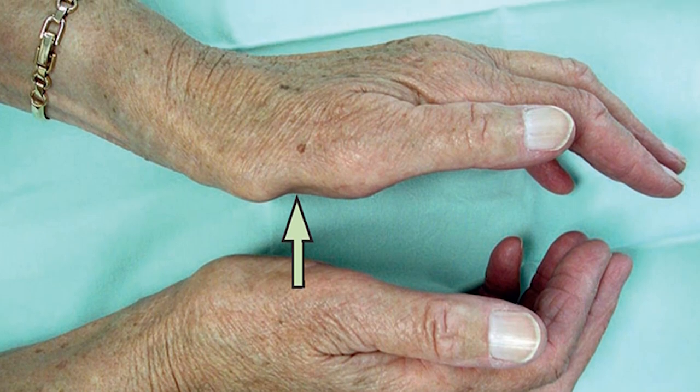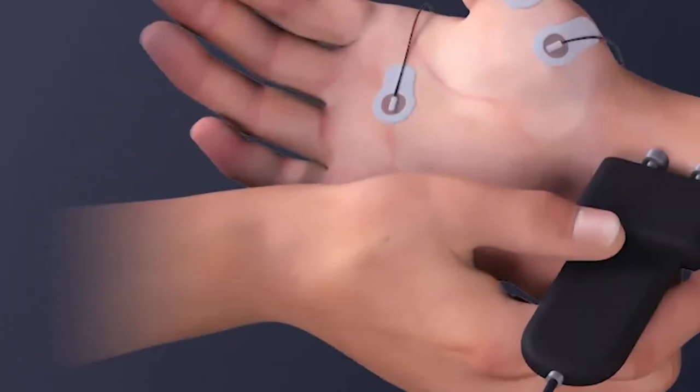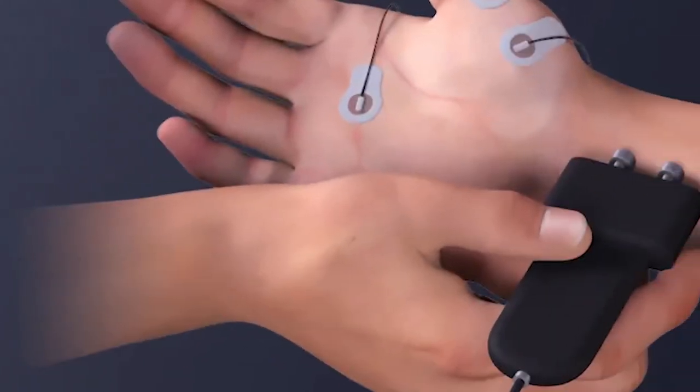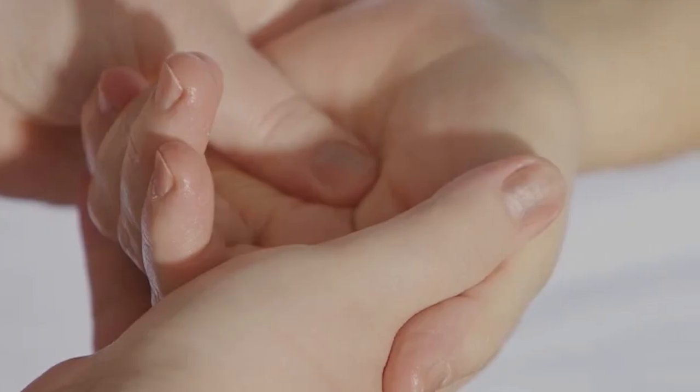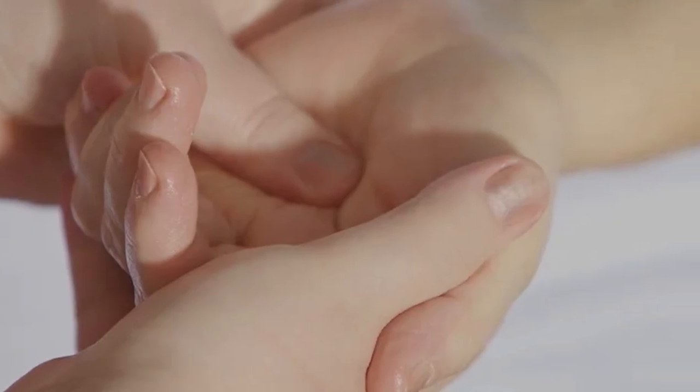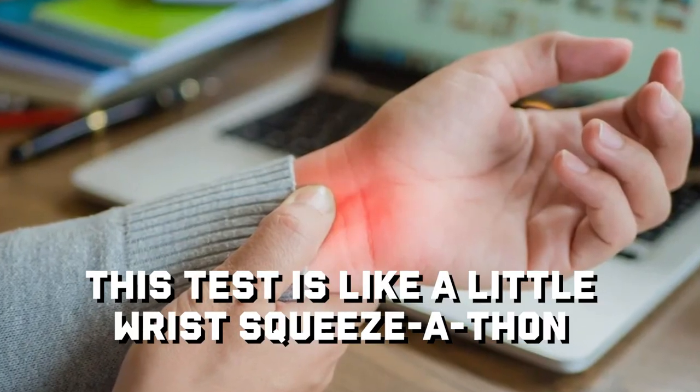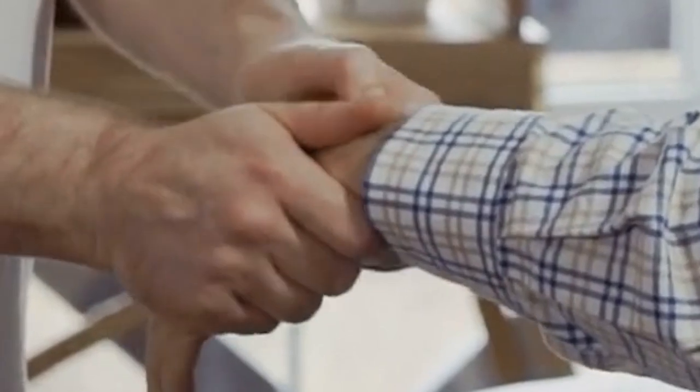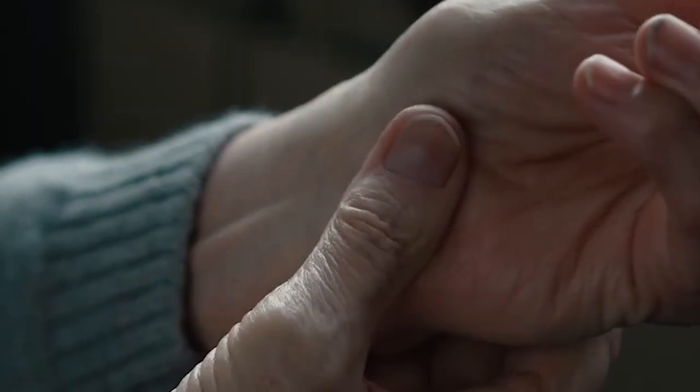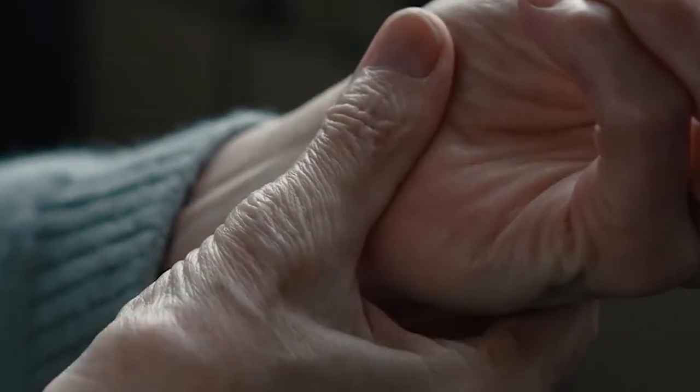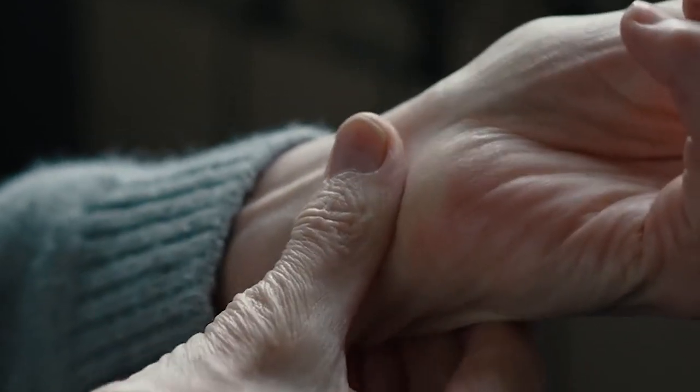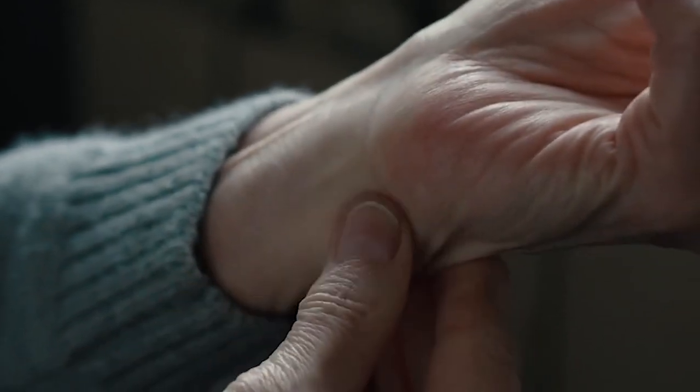Here are three widely popular tests that clinicians use for proper diagnosis of carpal tunnel syndrome. First, the carpal compression test is the most basic diagnostic test. This test is like a little wrist squeeze-a-thon. The clinician gently presses on the area where the median nerve hangs out. And if this triggers the same numbness, tingling, and pain you've been dealing with, bingo, that's a positive carpal compression test.